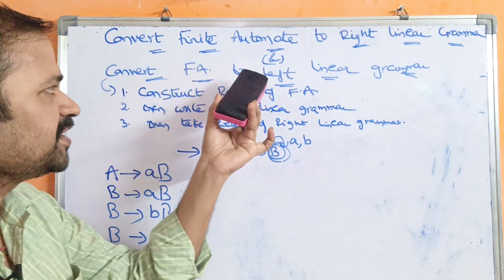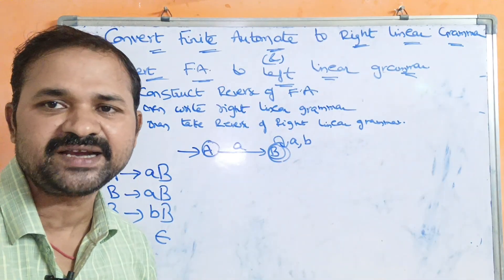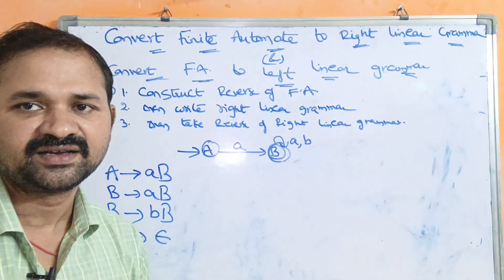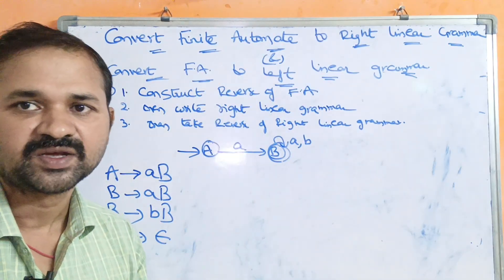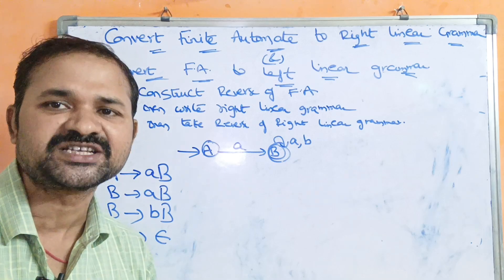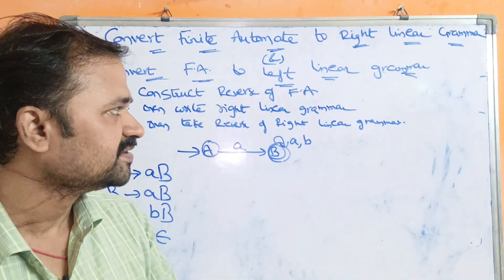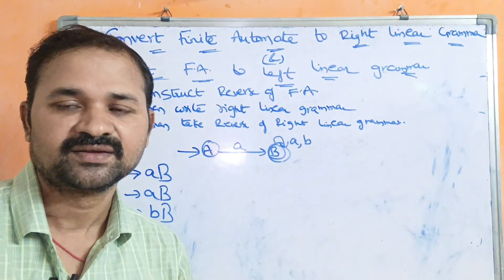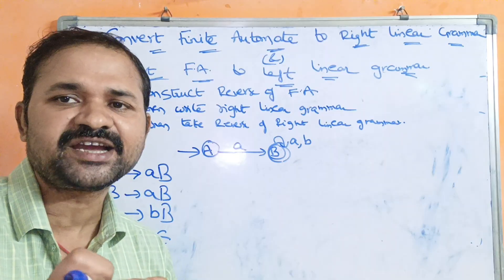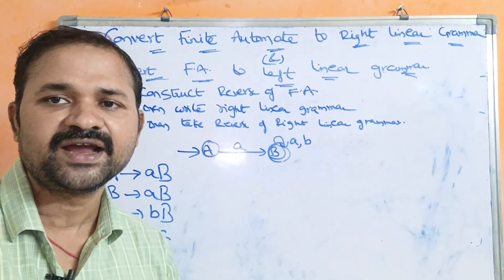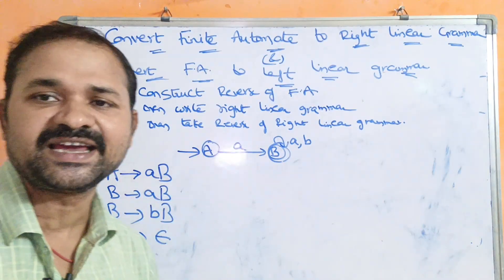Now let's see how to convert finite automata into left linear grammar — that is, how to construct left linear grammar based on the finite automata. For that we have to follow three steps. The first step is to construct the reverse of the finite automata. Reversing the finite automata means making the initial state the final state and the final state the initial state, and reversing the edges.